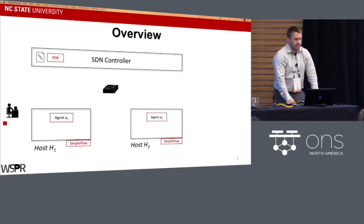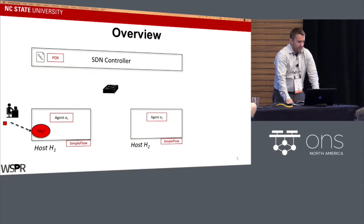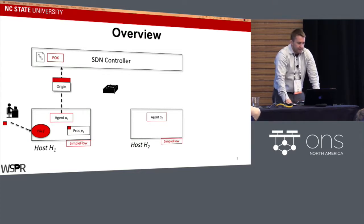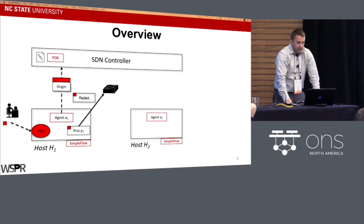When an administrator labels a file or process as confidential, a label is applied. In this scenario, the administrator labels file F as confidential. When a process accesses that file, the label is propagated to the process. When that process writes the confidential data as a packet to the network, the host agent intercepts it at a netfilter interface, informs the SDN controller that a tainted packet will be arriving, and specifies the origin — file F. The packet is sent with a label, and the data plane, seeing the label, forwards it to the SDN controller where policy is applied.